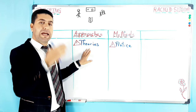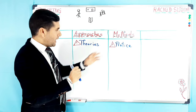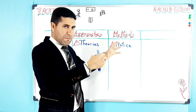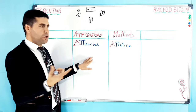When we talk about theories, we mean theories about language in general and theories of language learning and teaching. So approaches are general theories — we can say a philosophy of language and learning. Methods, on the other hand, are about practice, and practice leads us to the classroom — something that we do in the classroom.